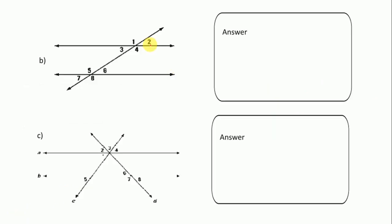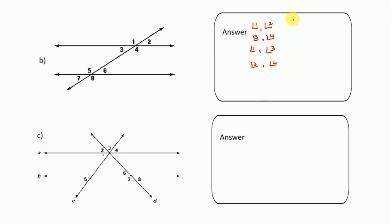Let's move to the next one. You follow the same rules as the last figure. First, angles 1 and 2 have a common side — so 1 and 2 are adjacent. Then 3 and 4, then 1 and 3, and 2 and 4.